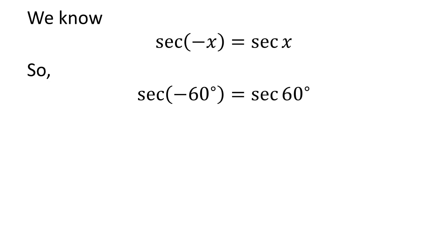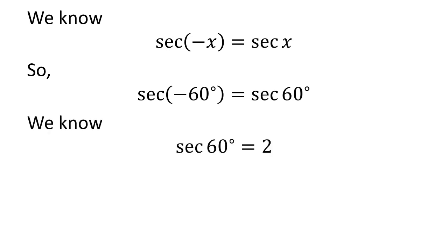Let us apply the above identity for secant of minus 60 degrees. Here x is 60 degrees, so secant of minus 60 degrees is equal to secant of 60 degrees. As we know, the value of secant of 60 degrees is equal to 2. So we get the value of secant of minus 60 degrees is equal to 2.